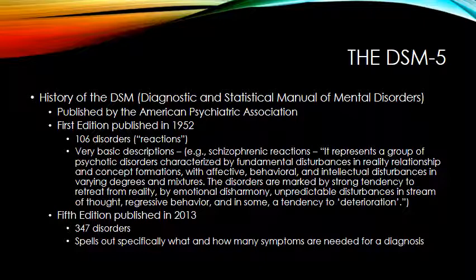Today we're on the fifth edition of the DSM, published in 2013. In this edition there are now 347 different identified disorders. Rather than just giving a general description or a paragraph about each one, the current DSM spells out very specifically what the symptoms are and what the criteria are — how many symptoms are necessary in order for an individual to receive a diagnosis.